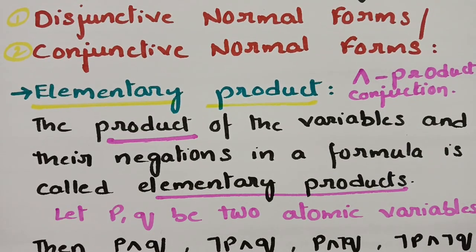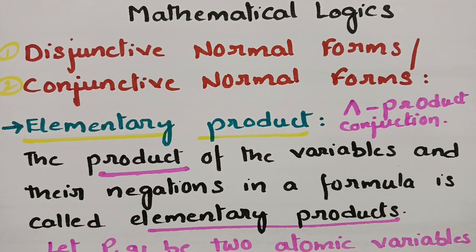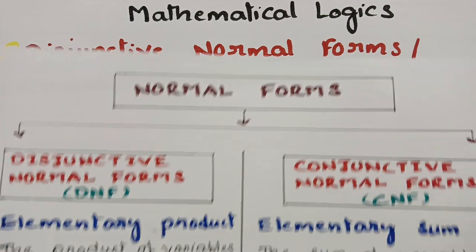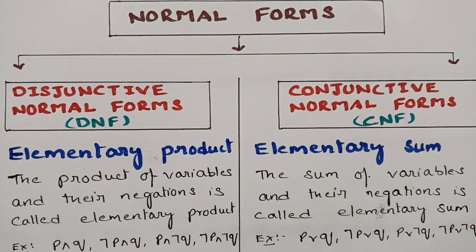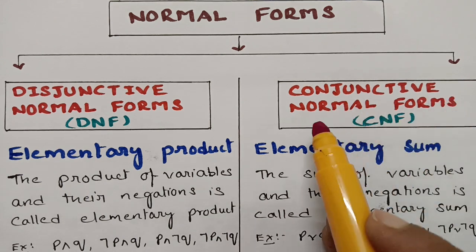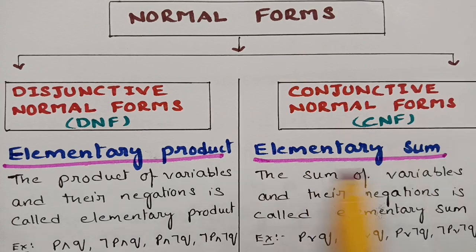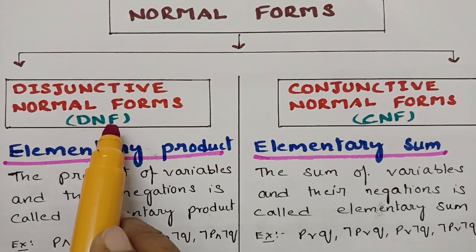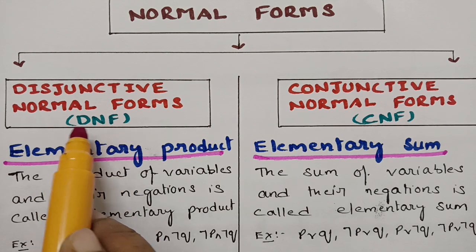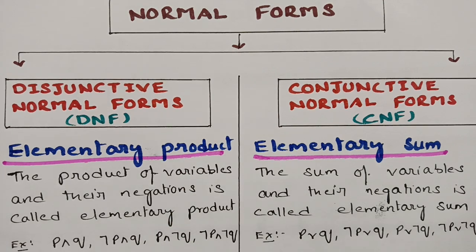Why are we learning about elementary sum and elementary product? Because now we are coming to the normal forms. There are two types: disjunctive normal form (DNF) and conjunctive normal form (CNF). This is a very important topic — you will see at least one question from DNF or CNF in your exam. So unless you know what each one is, you cannot go further. The product is represented by conjunction (cap, ∧) and the elementary sum is represented by disjunction (cup, ∨).